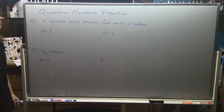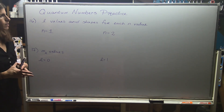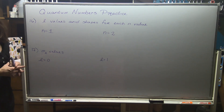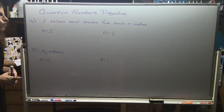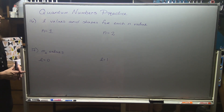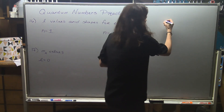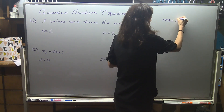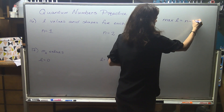Let's jump into some quantum numbers practice. There are so many different ways to ask these types of questions. Here they're asking us what kind of l values and shapes we'll see under each n value. There is a formula to calculate the allowed l values: your max l is going to be equal to n minus one.